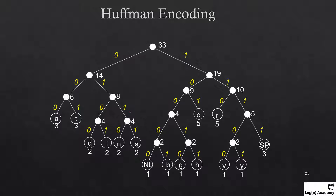Now, to find the code for each character, we traverse from the root to that character. For example, for 'a' we traverse: left, left, left — so 'a' equals 000. For 't', the path is different: the code is 001.